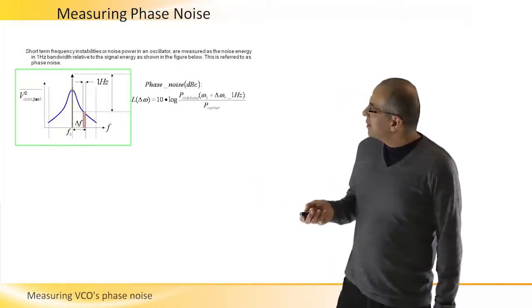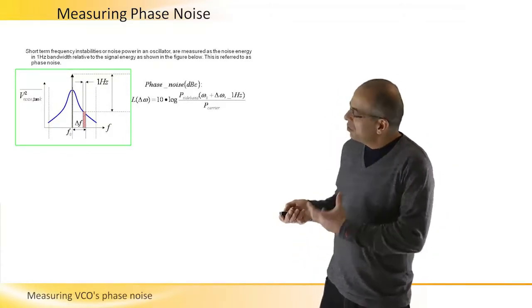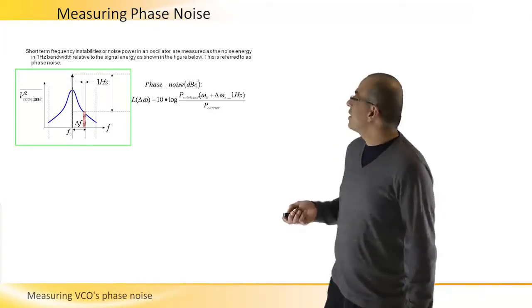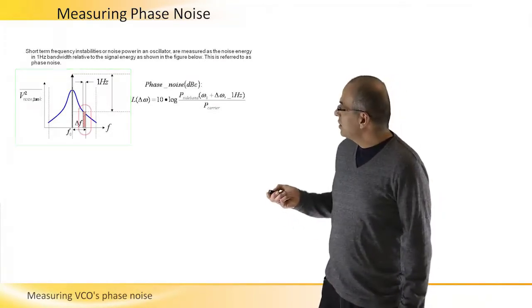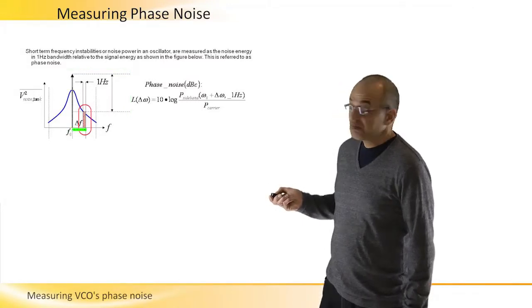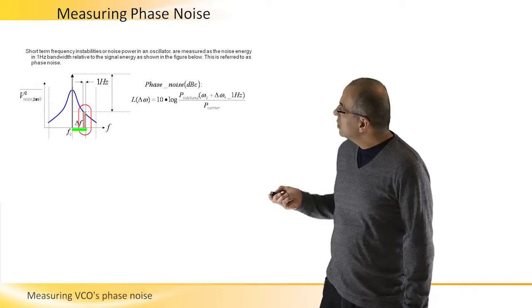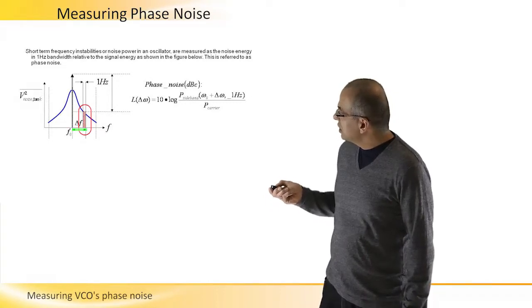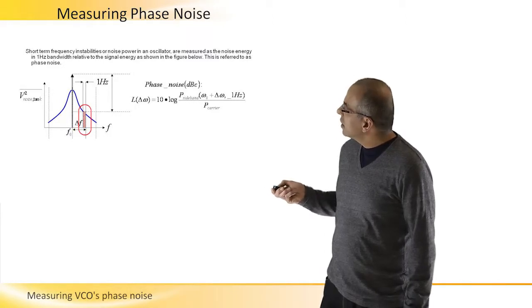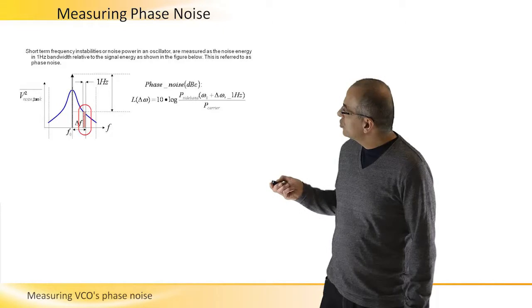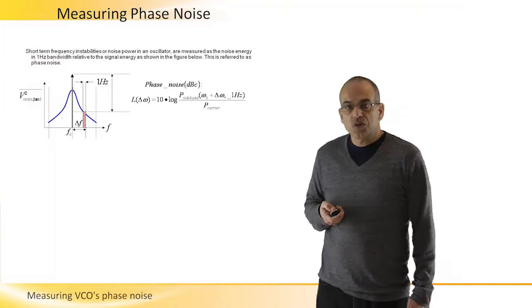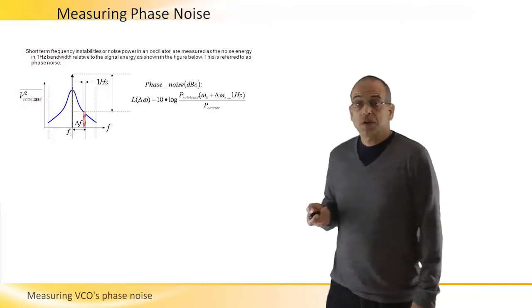The way we measure or qualify the phase noise of the signal is by taking a bandwidth of one Hertz distant Delta F Hertz from center frequency, checking the energy in this one Hertz slice, and comparing it to the energy in the center frequency. If we look at the phase noise expression, basically in dB...